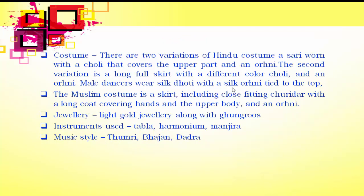Regarding Kathak costume, there are two variations of the Hindu costume: a saree worn with a choli and an orni, or a long full skirt with a different colour choli and an orni. Male dancers wear silk dhoti with a silk orni tied at the top. The Muslim variation consists of a skirt with fitting churida, a long coat covering the hands and upper body, and an orni. Dancers wear light gold jewellery along with ghungroos. The instruments used are tabla, harmonium and banjira. The music style that accompanies Kathak is thumri, bhajan and dadra.